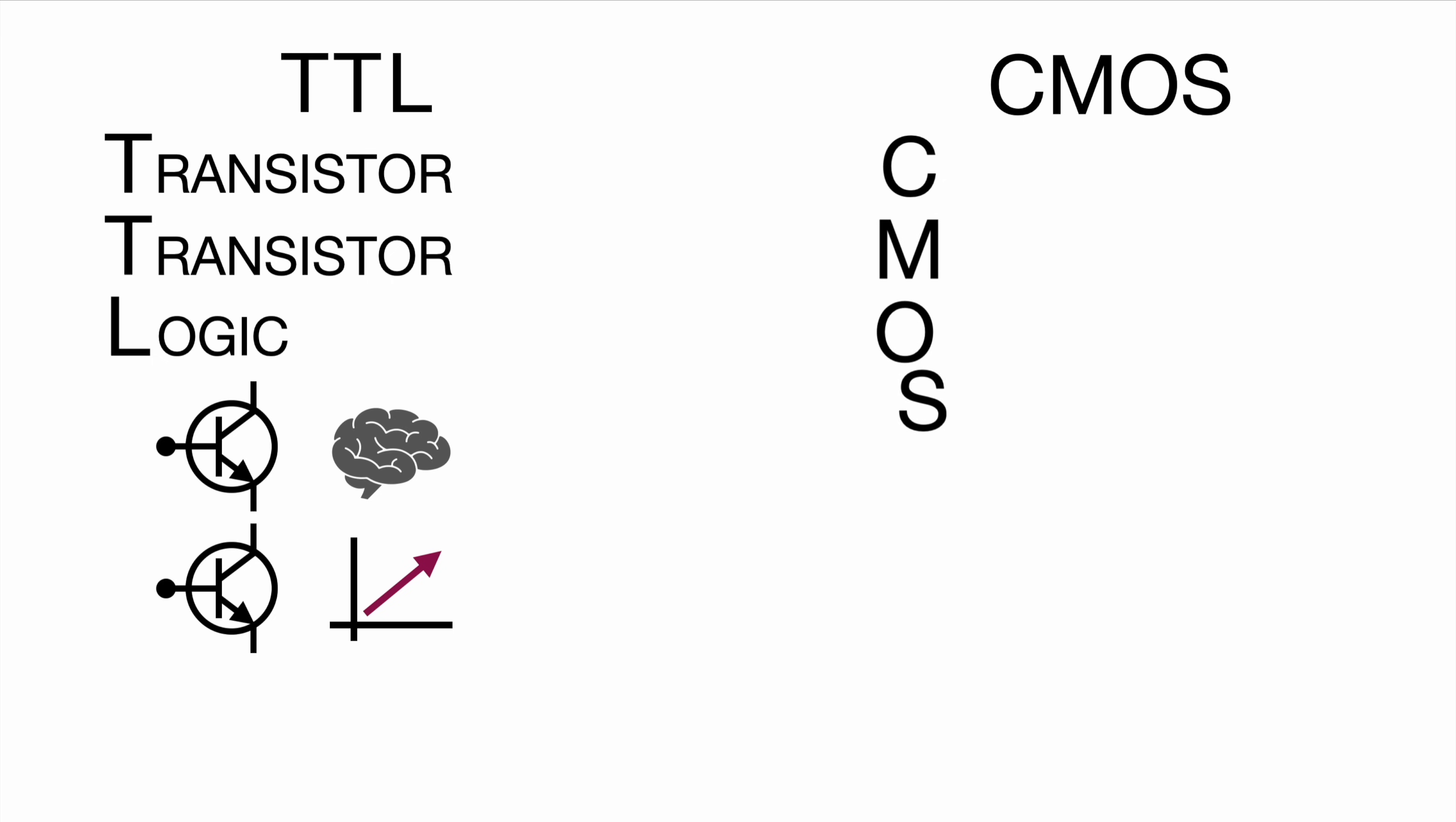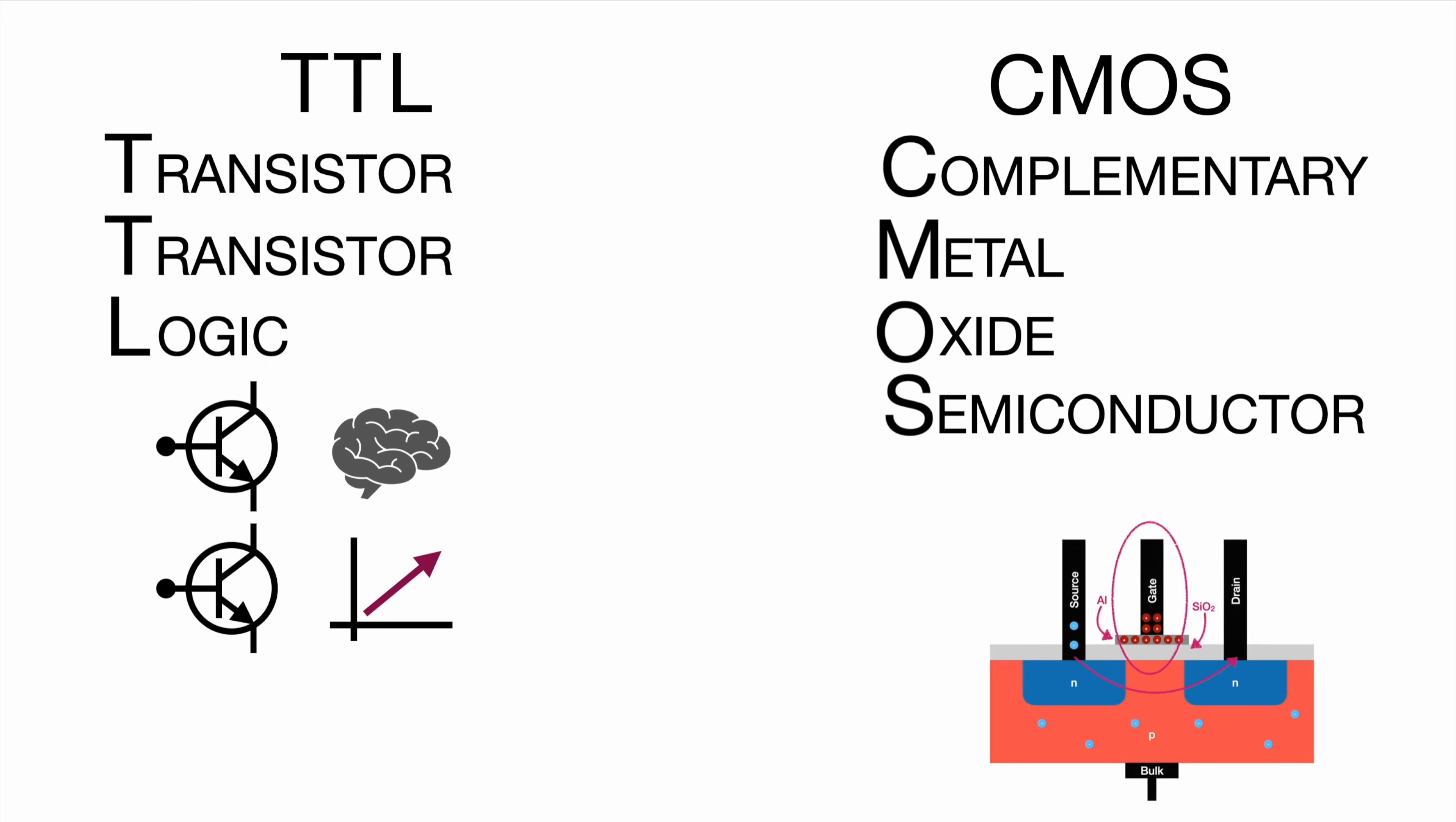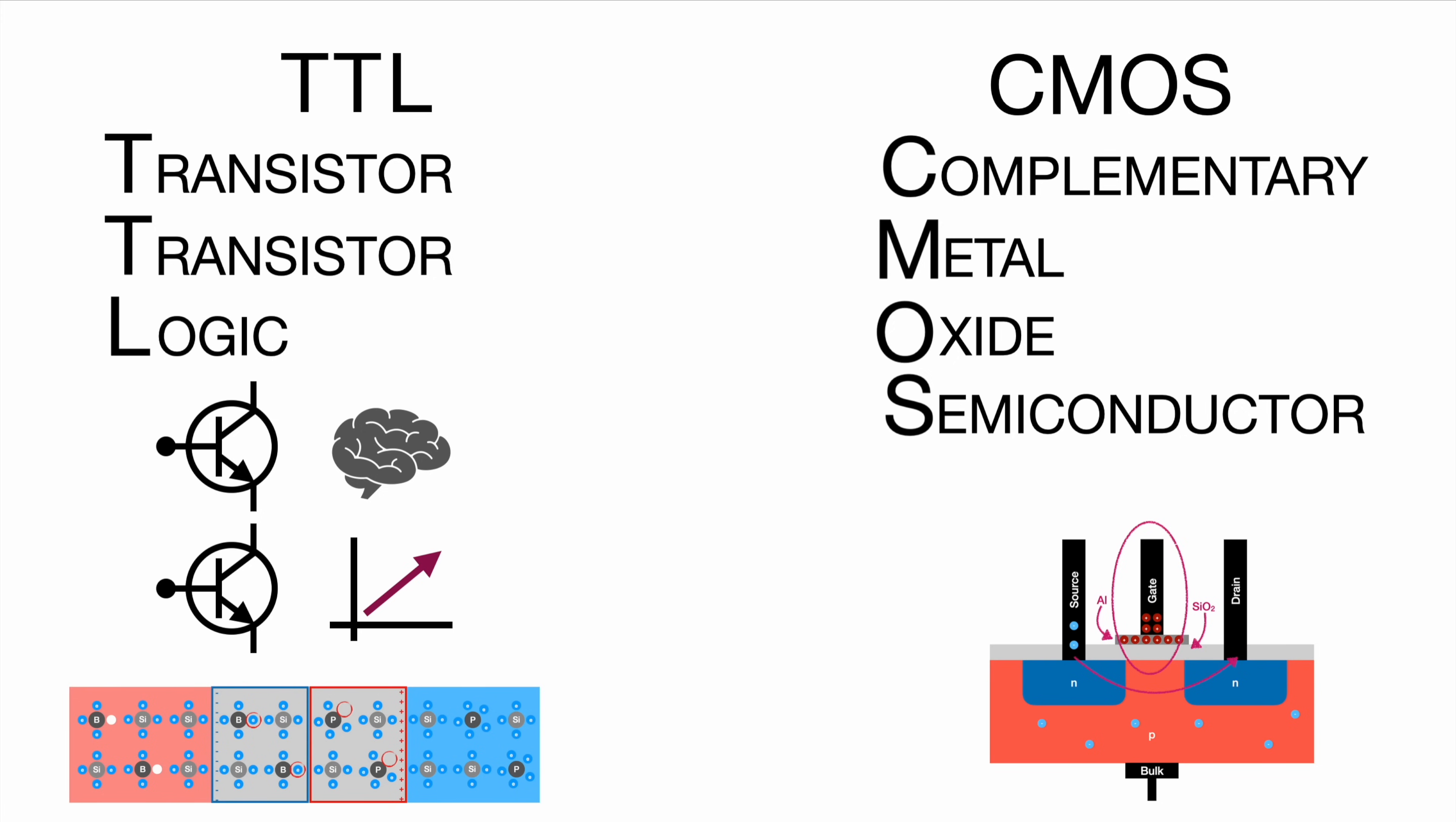CMOS is an abbreviation as well and it means complementary metal oxide semiconductor. The metal oxide indicates that we're using a MOSFET, so a metal oxide transistor, specifying which type of transistor is used. Obviously the question is what was used with TTL. TTL used BJTs, like the traditional kind of transistor.